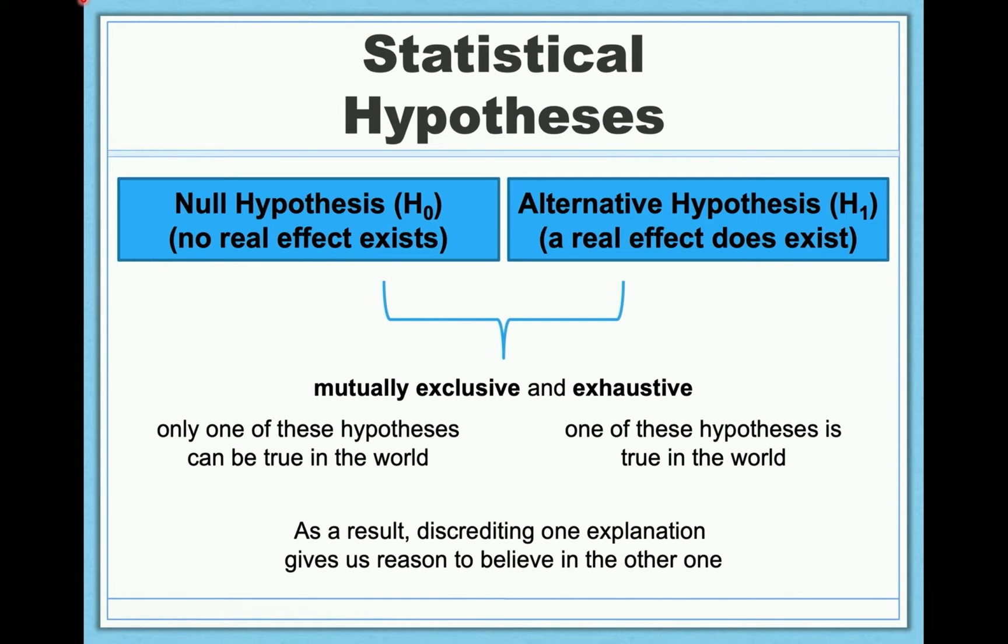And this is really important because since these two hypotheses are mutually exclusive and exhaustive in this way, we know that discrediting one of these explanations gives us reason to believe the other one. If, for example, we were able to discredit the null and we were able to say that the null is false, that we're reasonably confident that it is false, that there is no effect, this is the same as saying we're pretty confident that the alternative is true, that there is a real effect.